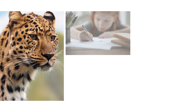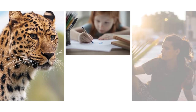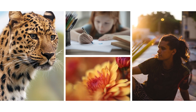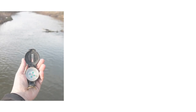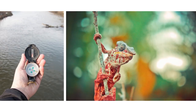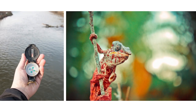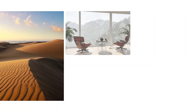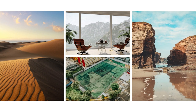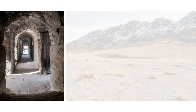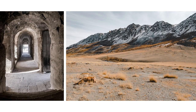Imagine a photograph where a single subject is in sharp focus and the rest of the image is blurred — this is called a shallow depth of field, great for really directing the audience's attention. Now imagine the whole picture is in focus; the range is now large or deep, which is good for when near and far detail is important.